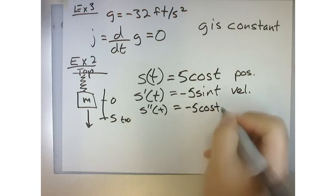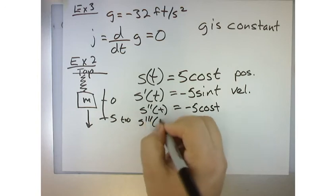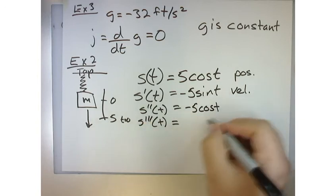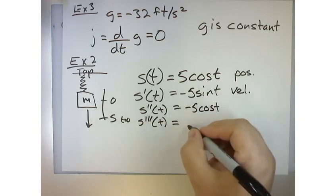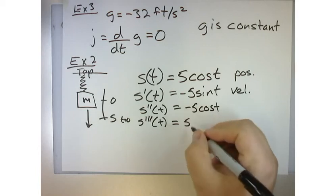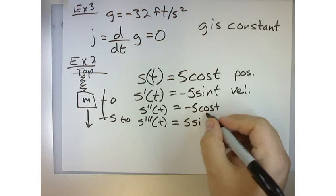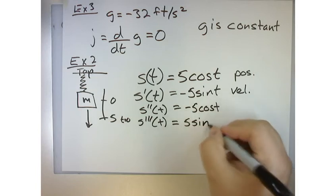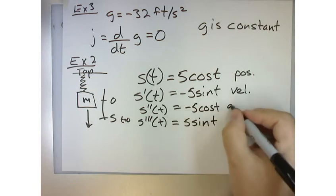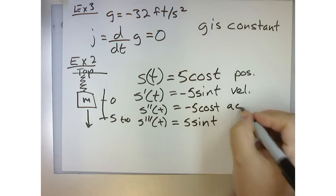The acceleration would be the velocity, which is just negative five cosine of t. And then we said the acceleration would be modeled by positive five sine of t, right? Because the derivative of cosine is negative sine, but then we have the negative. So the two negatives cancel. So this is the acceleration. And this is the jerk.